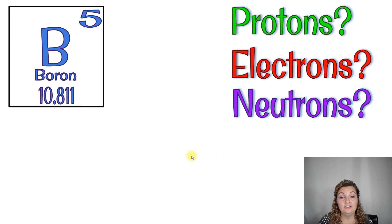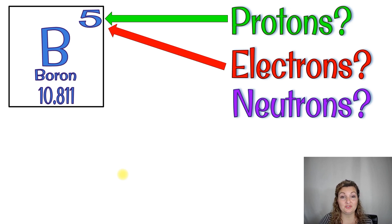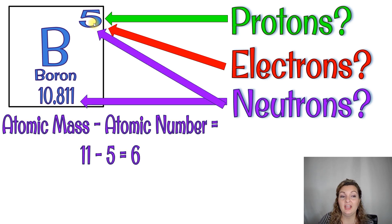Let's try boron to make sure we have this concept. If I'm asking how many protons boron has, you look at the atomic number — so boron has 5 protons. For electrons in a neutral atom of boron, same spot: the atomic number, which is also 5. Now for neutrons, we round the atomic mass. The digit right after the decimal is 8, which is above 5, so we round up to 11. Then we subtract the atomic number: 11 minus 5 equals 6. So boron has 6 neutrons.